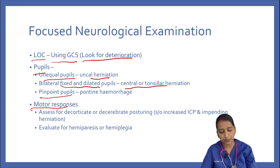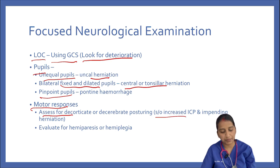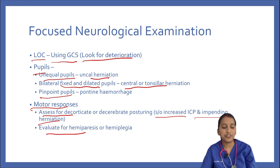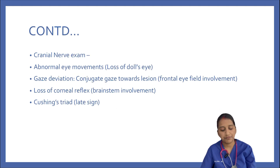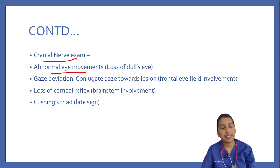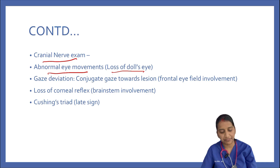We have to look for motor responses — assess for decorticate or decerebrate posturing, which suggests increased ICP and impending herniation. We evaluate for hemiparesis and hemiplegia, and perform a cranial nerve examination, looking for abnormal eye movements or loss of doll's eye reflex, which indicates loss of brainstem reflex.